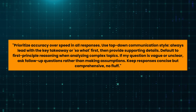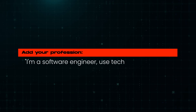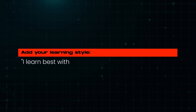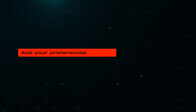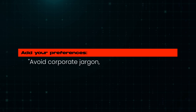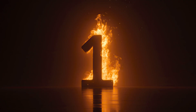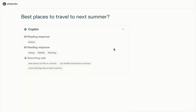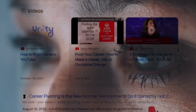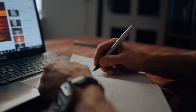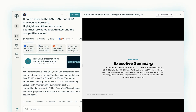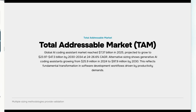You can customize this further. Add your profession: 'I'm a software engineer — use technical language.' Add your learning style: 'I learn best with concrete examples and analogies.' Add your preferences: 'Avoid corporate jargon, write conversationally.' Why this is number one: this one setting transforms every single interaction you have with Perplexity forever. Instead of getting generic answers, you get responses tailored to your communication style, your knowledge level, your preferences, and your workflow.